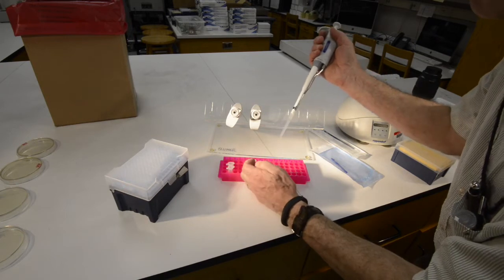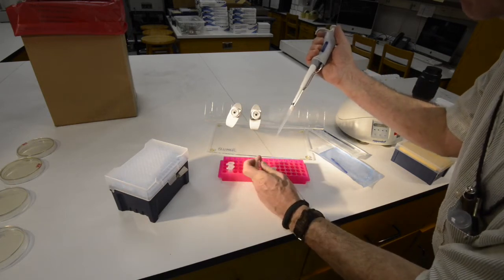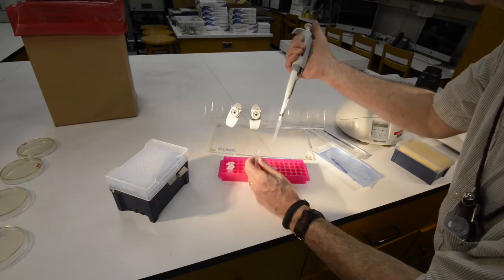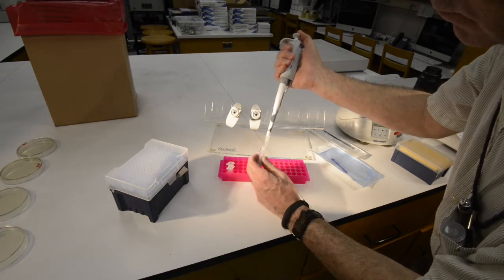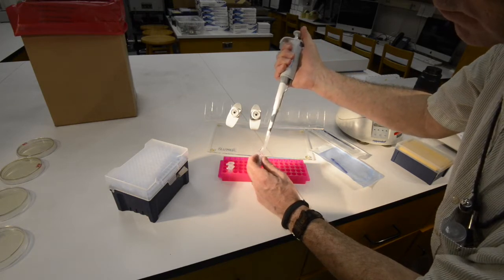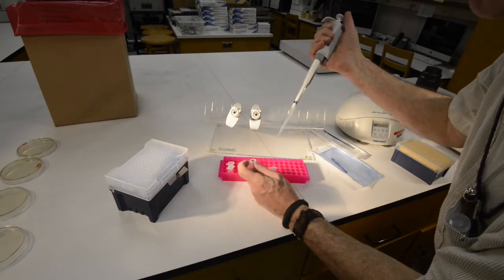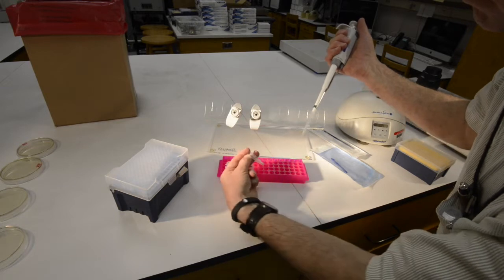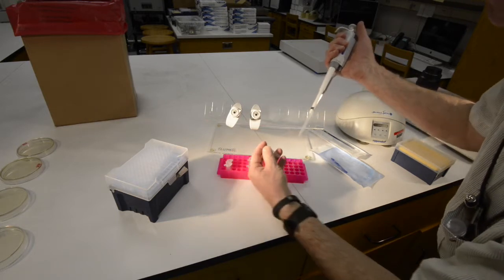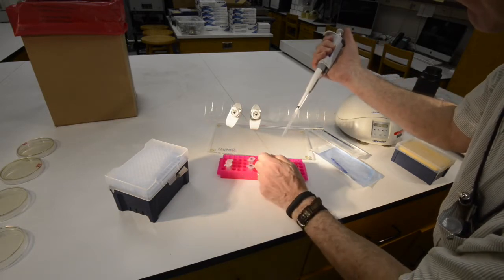In this process I'm taking sterile saline. Your instructor should have provided you with microfuge tubes of sterile saline, and we're measuring out 450 microliters of sterile saline that's going to go into a tube that already contains one surface sterilized bean beetle.